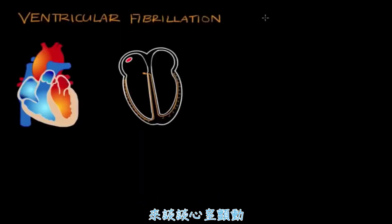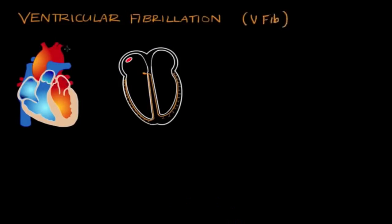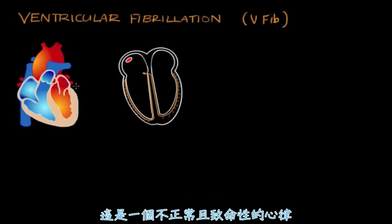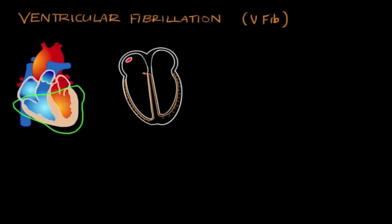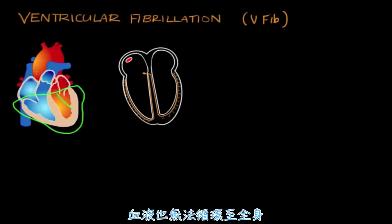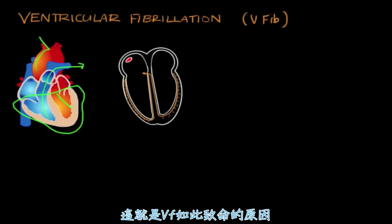Let's talk about ventricular fibrillation, also known as V-fib. This is an abnormal, deadly heart rhythm where the ventricles — these lower chambers of the heart — lose the ability to contract and circulate blood to the rest of the body. And that's why V-fib is so deadly.